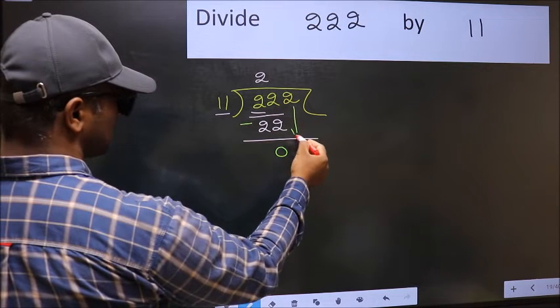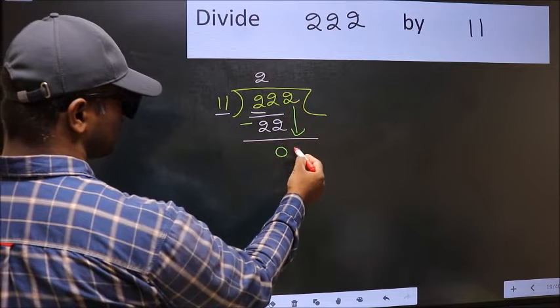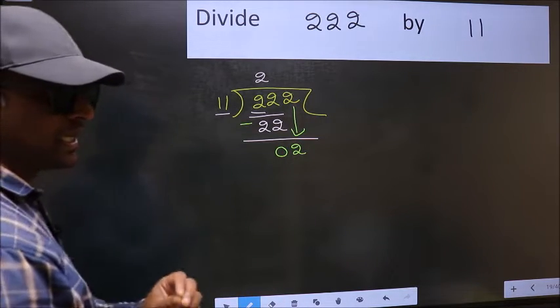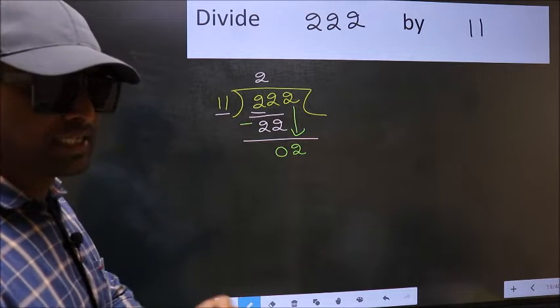After this, bring down the beside number. So, 2 down. After this step, the mistake happens. And the mistake is this.